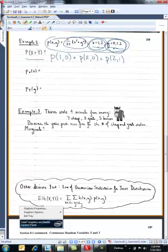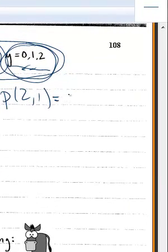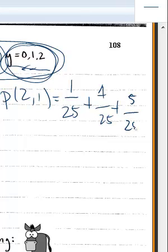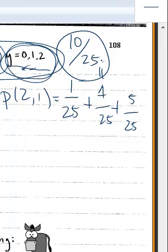And this is the joint function for x and y, so I just plug in 1 and 0, so that would be 1/25 plus 2,0 is 4/25 plus 2,1 is 5/25. So this should come out to be 10/25. So that's the probability of x is bigger than y.